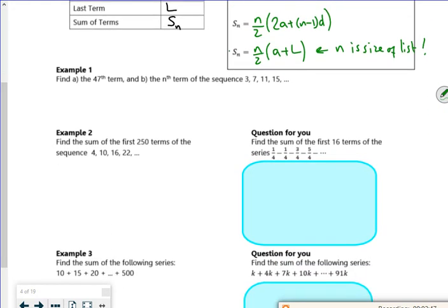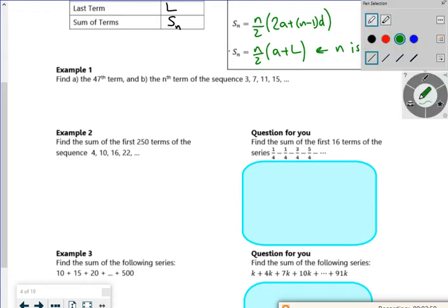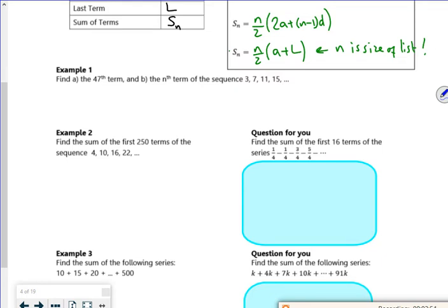Right, so let's have a look through an example then. So with these questions, you have to be really careful just to make sure that you're working with either an AP or a GP and if it's the term or the sum. So it says find the forty-seventh term in a sequence. So looking at this sequence, three is your first term. So A is three. If you look, each term is going up by four. So my common difference is four. I want the forty-seventh term. So N is forty-seven. And I want the term, not the sum.